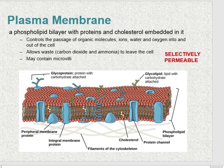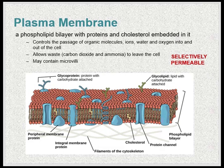The plasma membrane is a phospholipid bilayer that has proteins and cholesterol embedded within it. This is a selectively permeable membrane that controls the passage of organic molecules, ions, water, and oxygen into and out of the cell. It also allows for waste like carbon dioxide and ammonia to leave the cell and may contain microvilli — the invaginations of the plasma membrane we covered earlier.